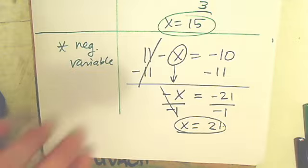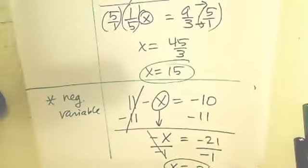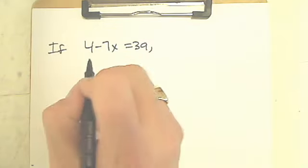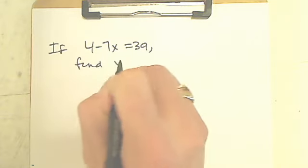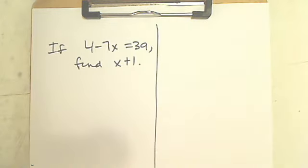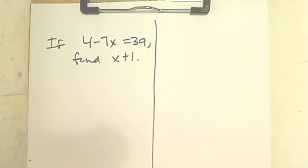Let's do two more, and we're done. Actually, let's do one more. If 4 minus 7X is 39, find X plus 1. If 4 minus 7X equals 39, find X plus 1. If you notice here, the first equation has an equal sign. That means you can actually solve to find X first. Once you find X in that equation, you're going to substitute it into the second equation to find the solution.